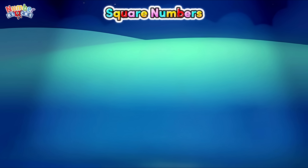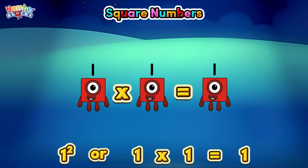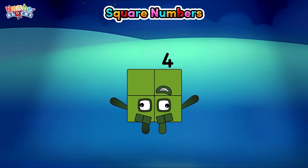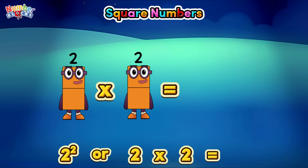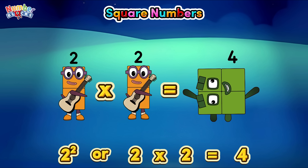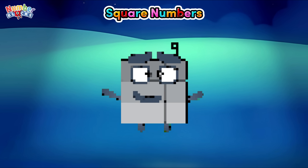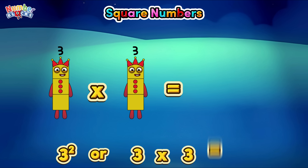And now, let's check out square numbers! One — one square, or one times one, is equals to one. Three square, or three times three, is equals to nine.